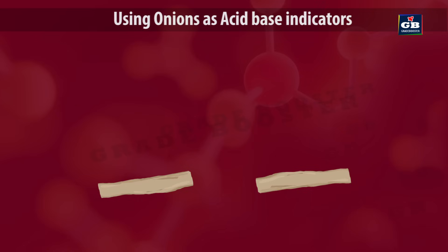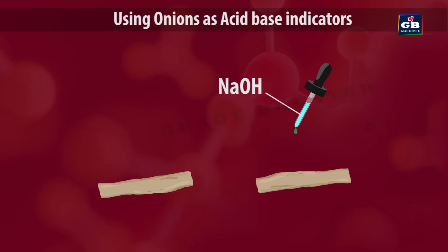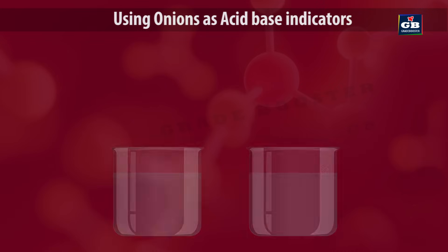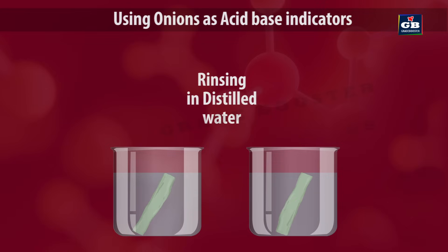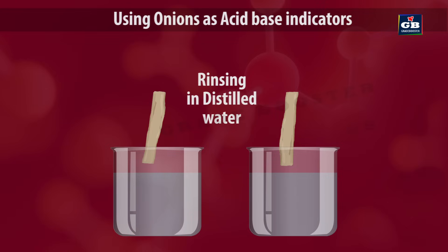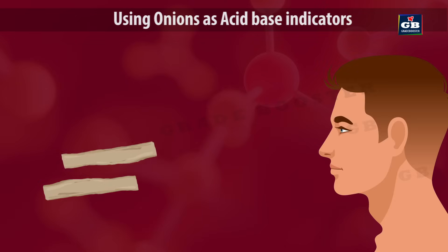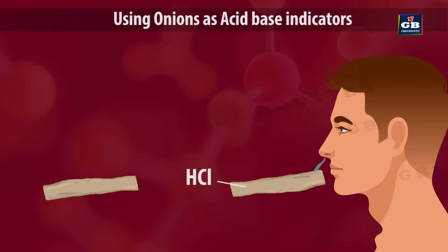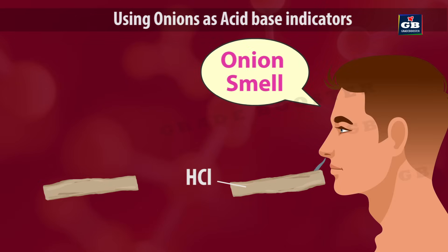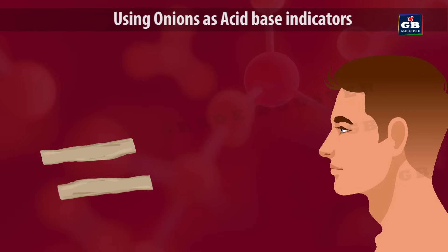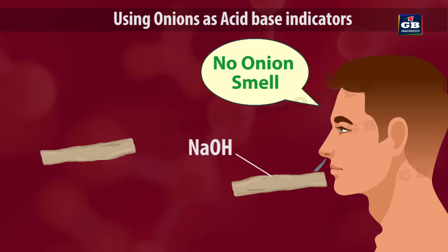Now place these strips on a flat surface and add dilute HCl drops to strip 1 and sodium hydroxide drops to strip 2. Rinse these two strips in distilled water separately. Now once again smell the two strips. The strip to which HCl is added gives the same onion smell. But the strip to which sodium hydroxide is added does not give any onion smell — it has lost its onion smell.